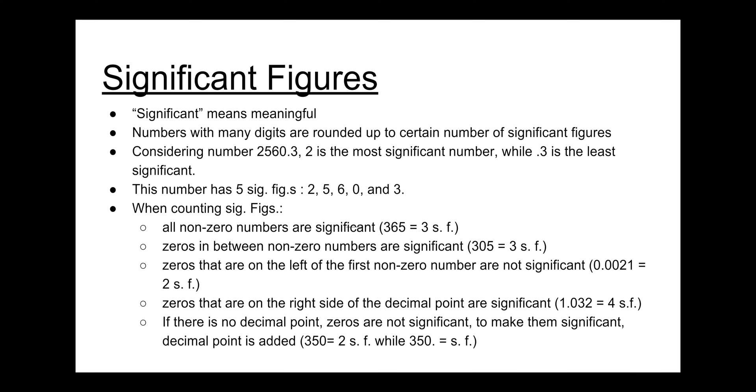Significant figures. Significant here means meaningful. Numbers with many digits are usually rounded up to a certain amount of significant figures since not all digits are significant or meaningful. Consider the number 2560.3. 2 in this case is the most significant number while 3 is the least significant. This number has five significant figures: 2, 5, 6, 0 and 3.